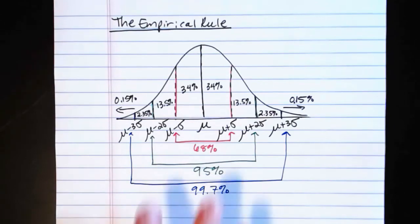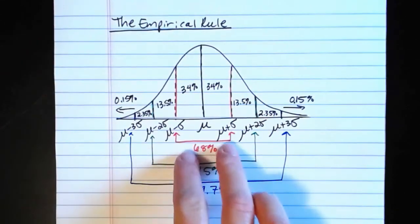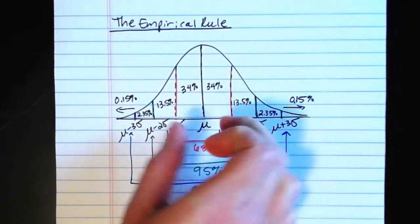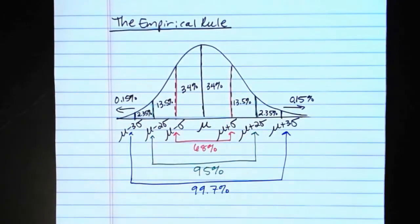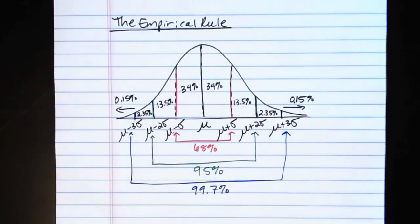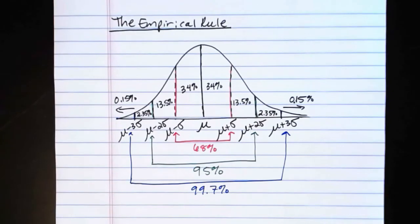So the empirical rule itself only covers these three percentages: 68% within one standard deviation, 95% within two, and 99.7% within three. But we can get a lot more information out of the empirical rule. We're going to use it to find various probabilities when we know that the data we're dealing with follows a normal distribution. Let's take a look at an example.